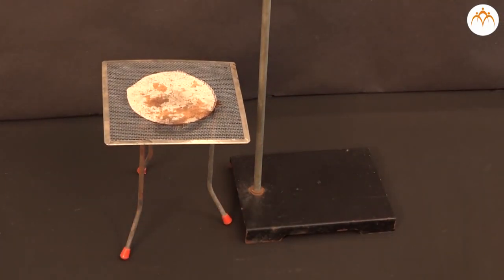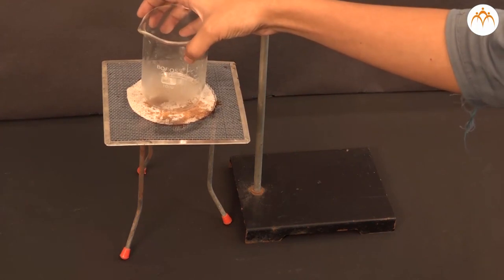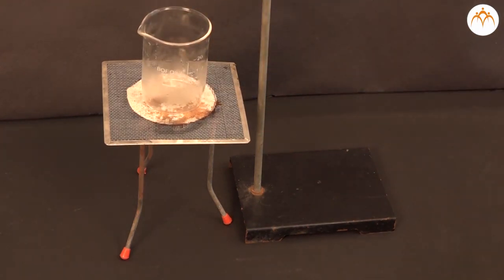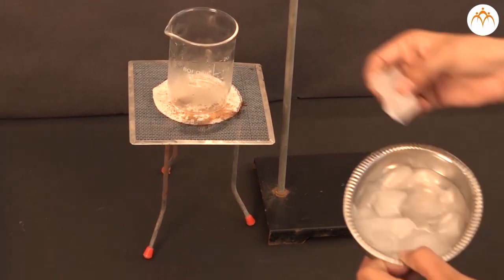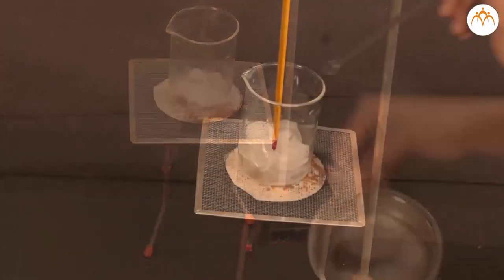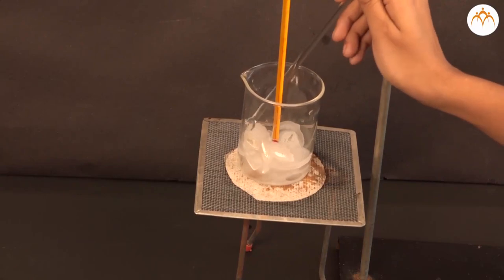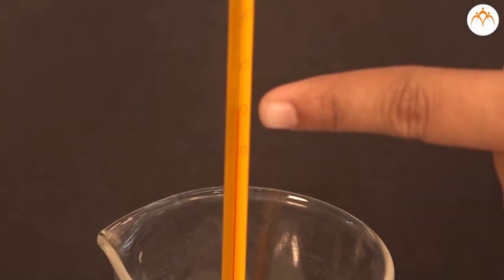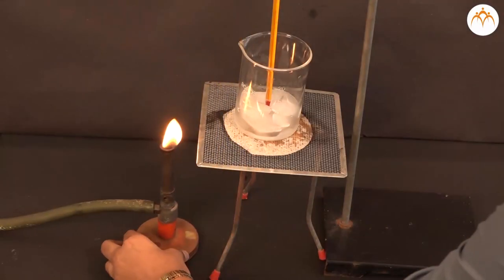Procedure: We have taken a few pieces of ice in a glass beaker. Keep beaker on tripod stand and put it on the stand. Attach a thermometer on the stand in such a way that the thermometer bulb will completely dip in the ice.